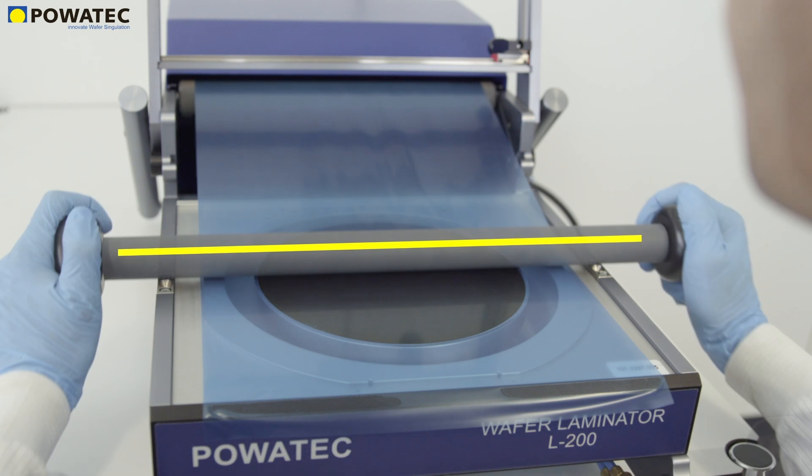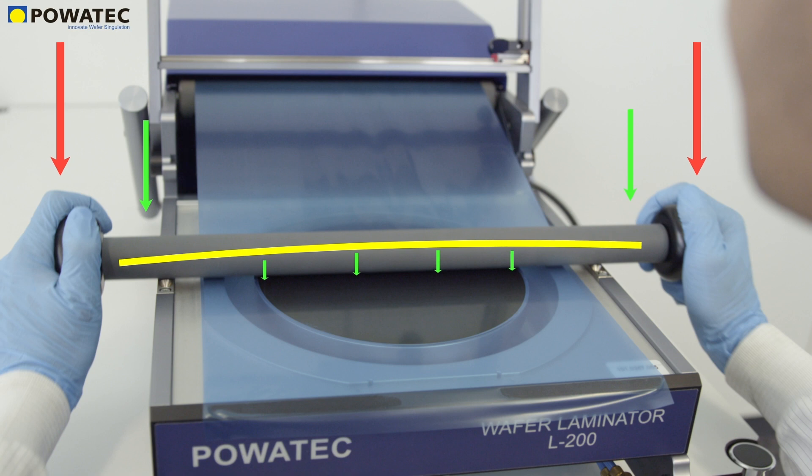The adjustable chuck height and the specific design of the L series ensure that the exerted force from the lamination roller is primarily applied onto the laminator table and not onto the fragile wafer. This patented design actually decreases the amount of force applied onto the fragile wafer as the force on the lamination roller increases.